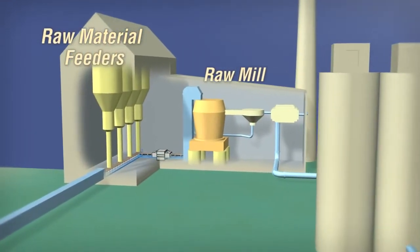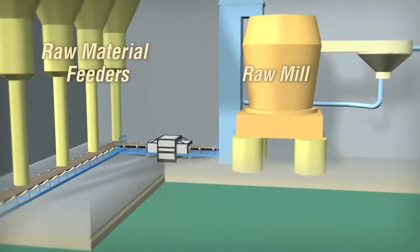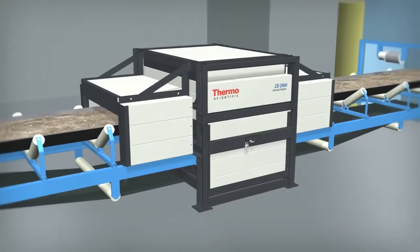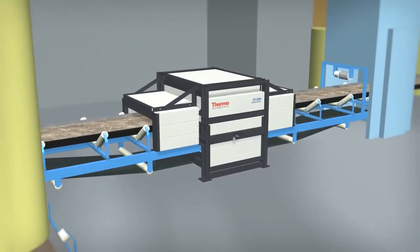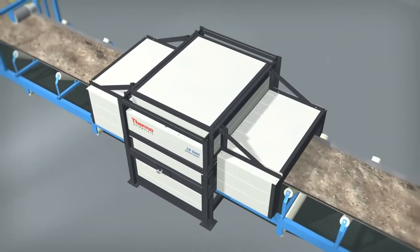In the raw mix proportioning area, the analyzer is located after the raw material feeders but before the raw mill. The system analyzes changes in the raw material additives and responds rapidly by automatically adjusting the raw material feed rates.